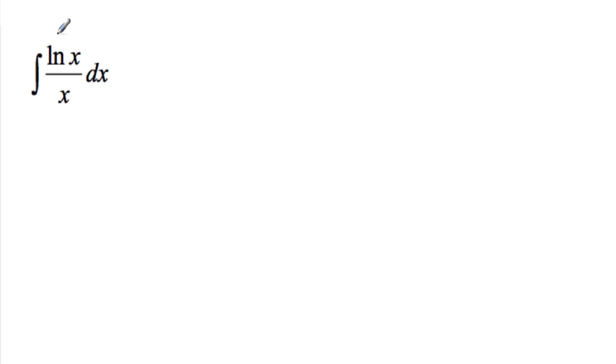So in this case, I can see that I have ln, and then I also have the derivative of ln. So what I'm going to set is u equals ln. In this case, there's not really an outside function, but you'll see what happens. So if we set u equals ln x,